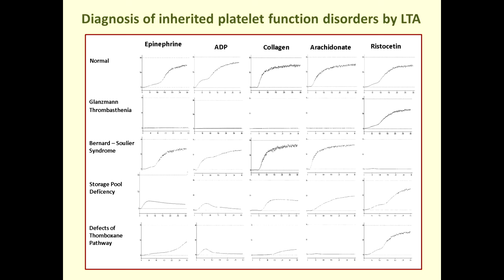From our own laboratory experience applying light transmission aggregometry to different inherited platelet function disorders, there are typical patterns depending on the agonist used. In Glanzmann thrombasthenia, there is no aggregation with any agonist except ristocetin, which induces agglutination via GP1-B and von Willebrand factor. The opposite applies to Bernard-Soulier syndrome, which shows normal aggregation with all agonists that induce aggregation via fibrinogen binding to alpha-2b beta-3, but no agglutination with ristocetin. Storage pool deficiency is characterized by absence of a second wave of aggregation to epinephrine and ADP, reduced aggregation to collagen, and normal aggregation to ristocetin. Thromboxane pathway defects show complete absence of arachidonic acid-induced aggregation and absent second wave to epinephrine and ADP.